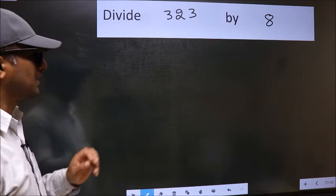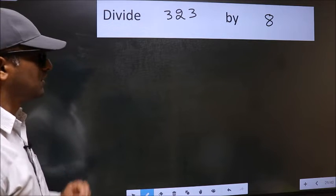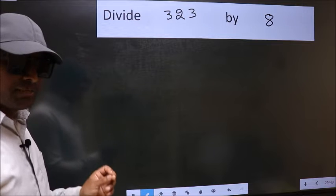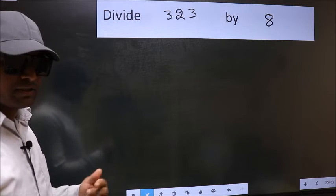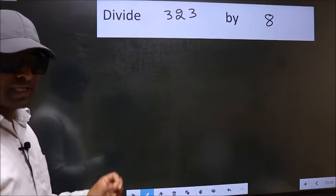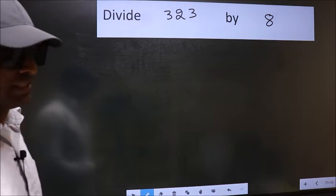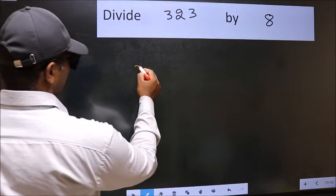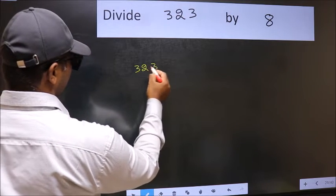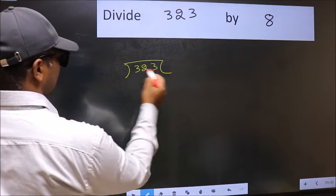Divide 323 by 8. While doing this division, many do this mistake. What is the mistake that they do, I will let you know. But before that, we should frame it in this way. 323 and 8 here.